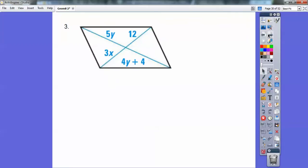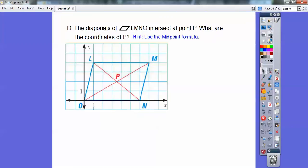Here, this parallelogram, the diagonals, this 4y plus 4 is for this piece right here. So 4y plus 4 is that piece. The diagonals bisect each other. So 5y equals 4y plus 4, and 3x equals 12. So then you're going to divide by 3 over here, and you get x equals 4. On the other one, you're going to subtract 4y and get y equals 4.